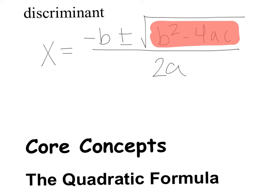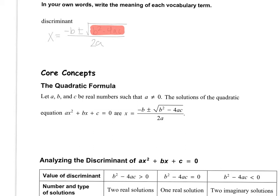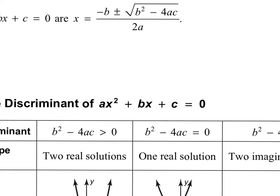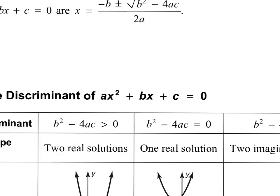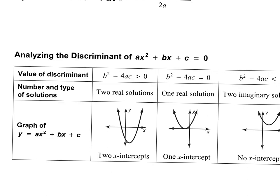Why is the discriminant important? The value you get under that radical is going to tell you how many solutions you're going to have and what type they are. The a, b, and c are all the same a, b, and c as in standard form quadratics. A is the number in front of x squared, b is always the number in front of x, and c is always the number by itself — assuming everything is in the right order.